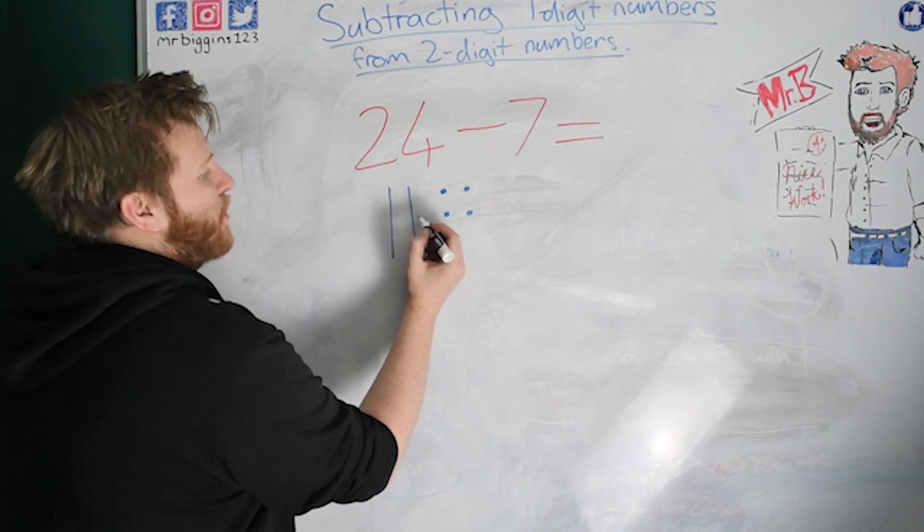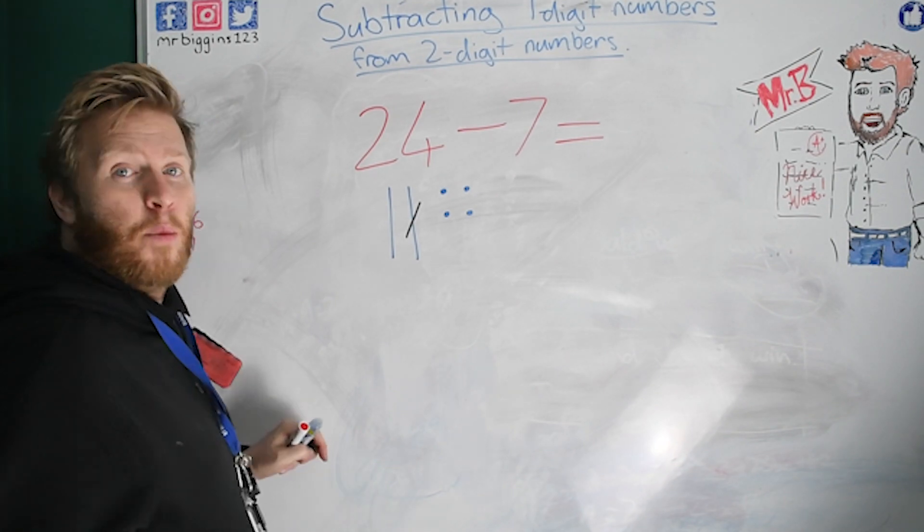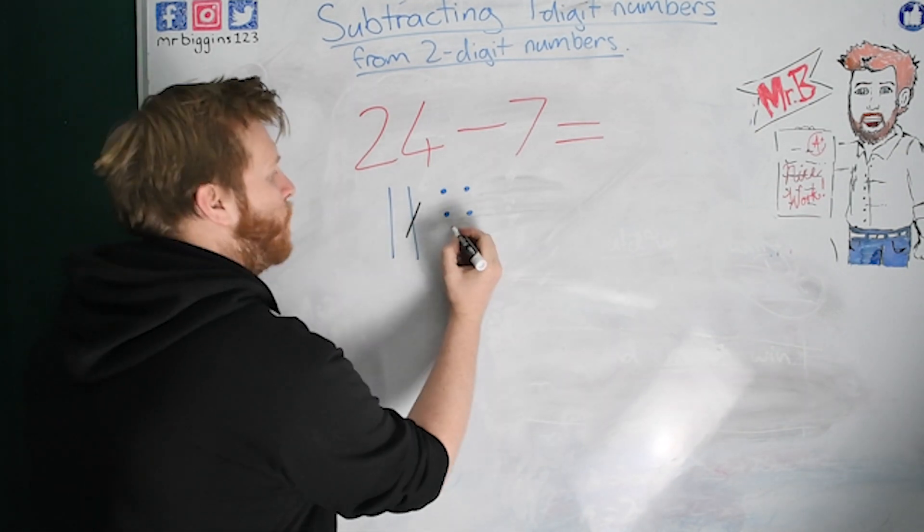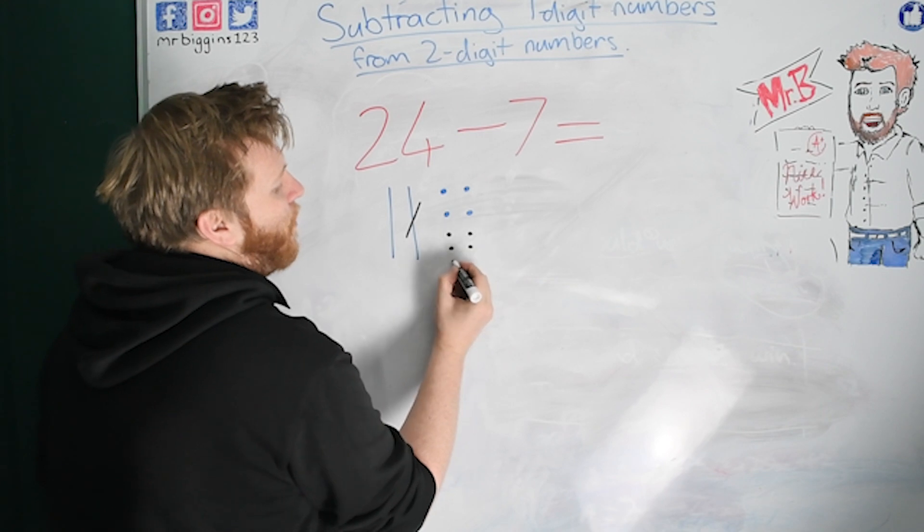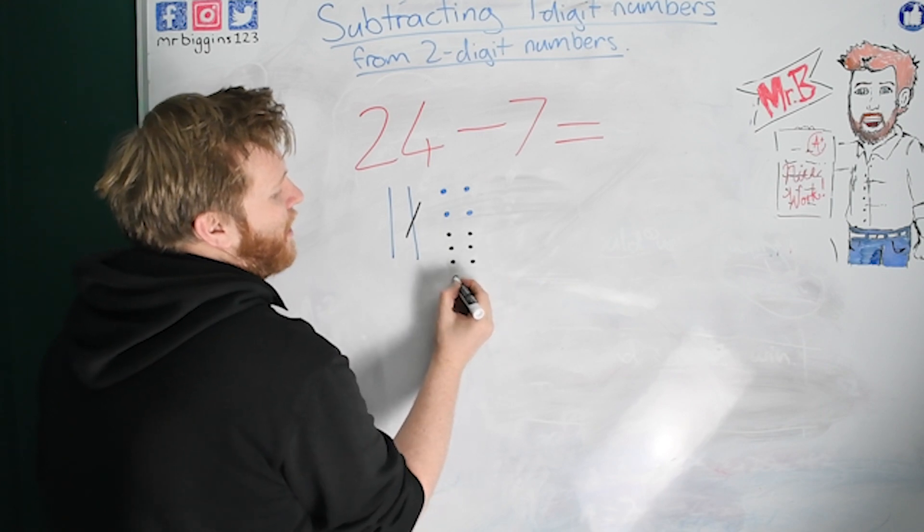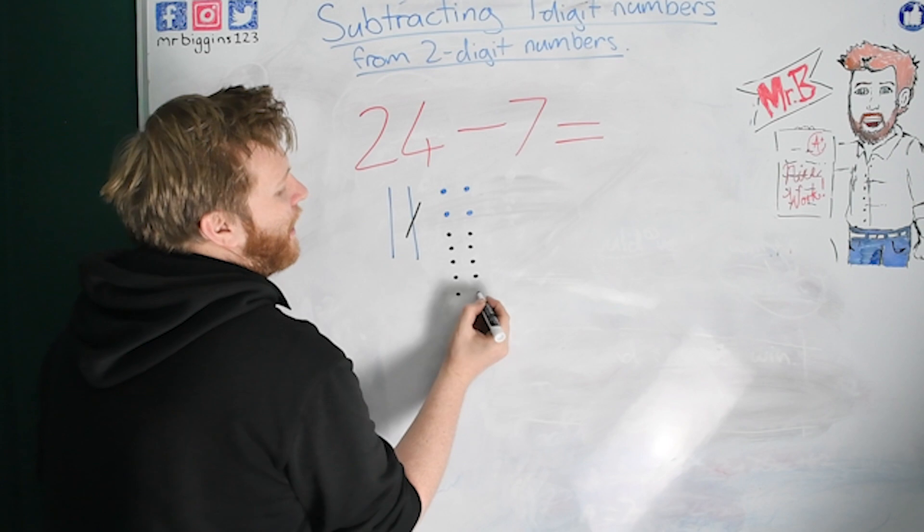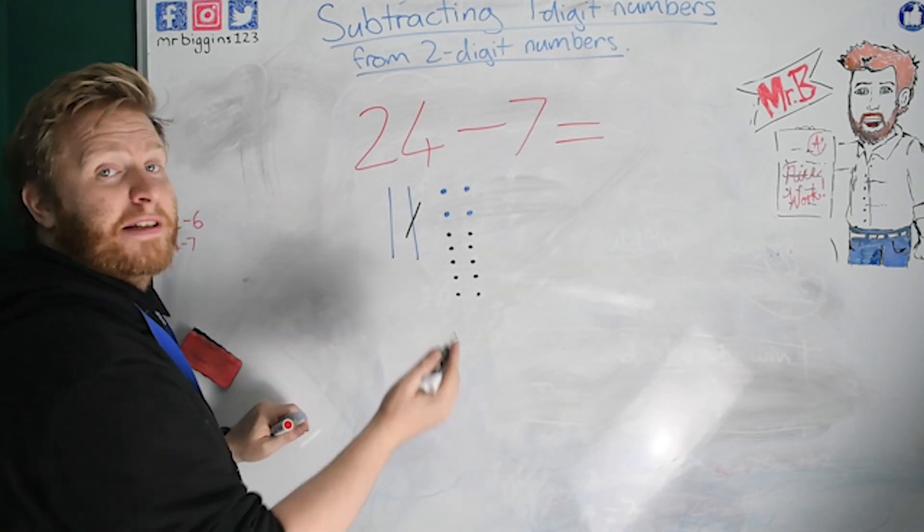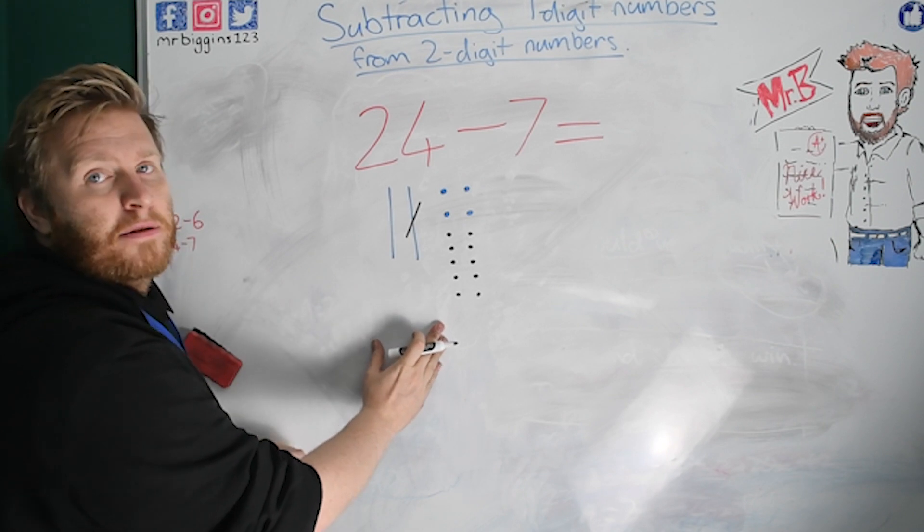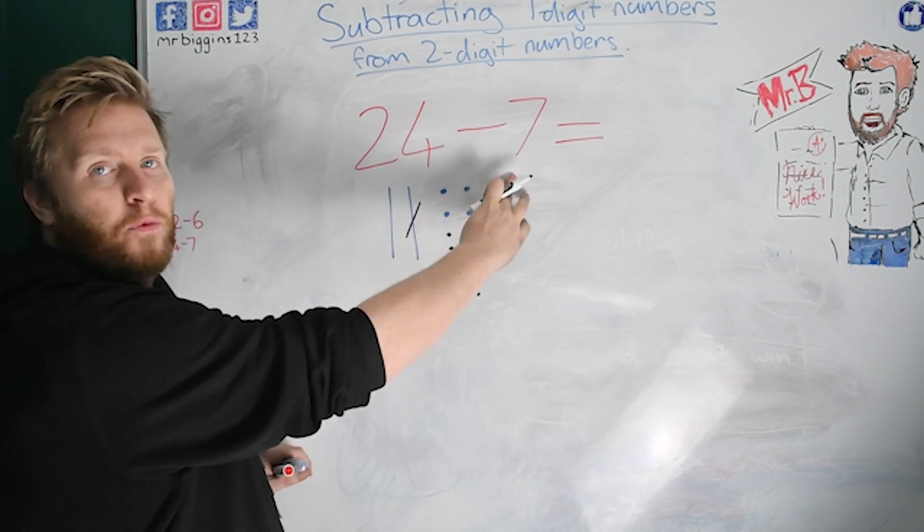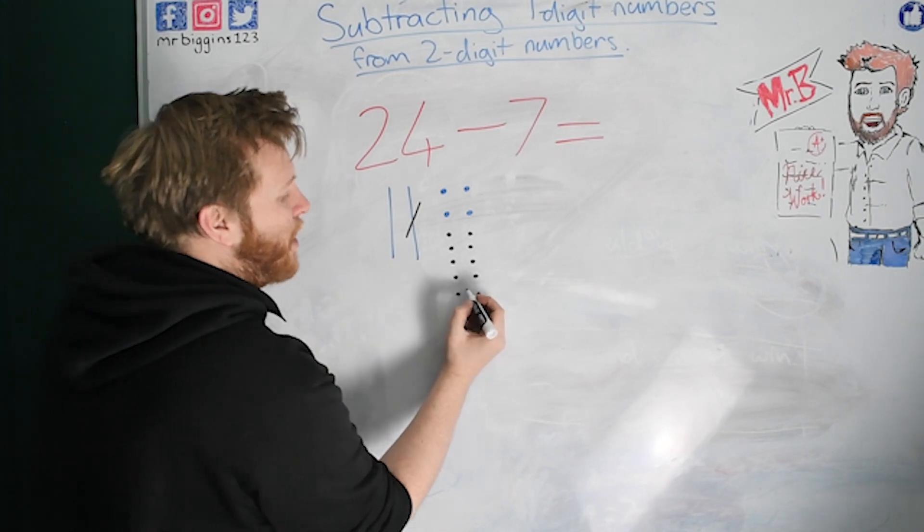That's right. We're going to swap this ten, exchange this ten. And we're going to add ten ones. Well done. One, two, three, four, five, six, seven, eight, nine, ten. So we have ten ones on top there. So we've exchanged a ten. What are we going to do next?